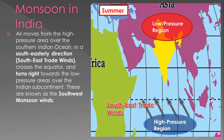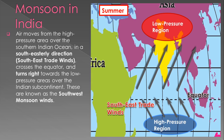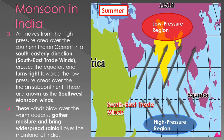Look at the diagram. The southeast trade winds, after reaching the equator, move in a right direction in the northern hemisphere and are known as the southwest monsoon winds. These winds blow over the warm ocean, gather moisture, and bring widespread rainfall over the mainland of India. This is how the southwest monsoon picks up moisture from the ocean and brings widespread rainfall to the Indian subcontinent.